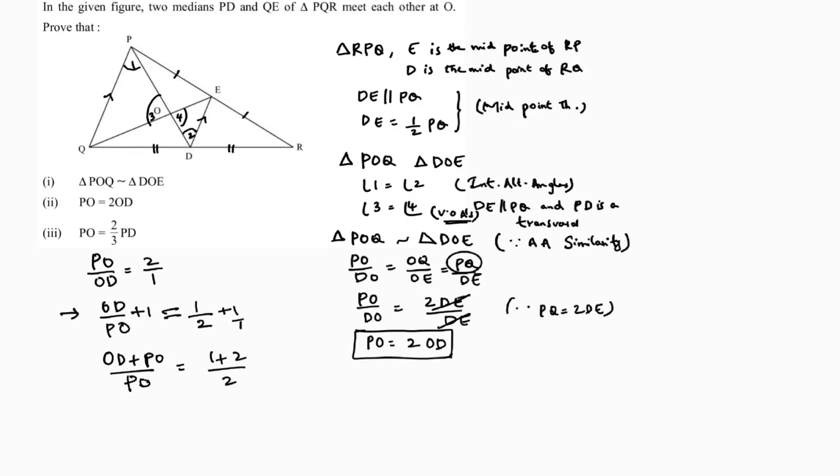If you observe the diagram, OD plus PO equals PD. So PD by PO equals 3 by 2.